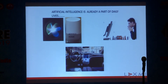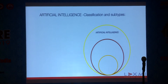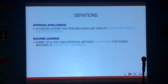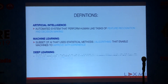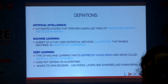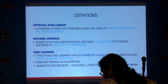Now, coming to formulas based on artificial intelligence. AI is already part of our daily lives — Siri, Google Home, chess machines, and self-driving cars. Artificial intelligence consists of machine learning and deep learning. Machine learning is an automated system that performs human-like tasks of feature recognition and decision making, utilizing statistical algorithms that enable machines to improve with experience. Deep learning is inspired by the human brain — hence called artificial neural networks — and makes its own decisions using nodes, layers, and synapses.